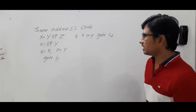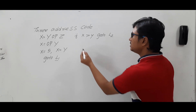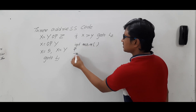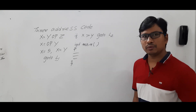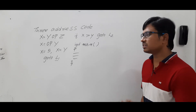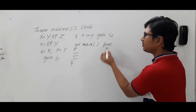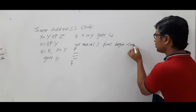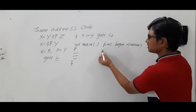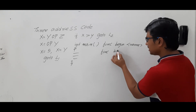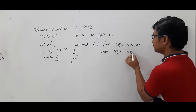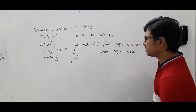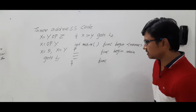If you want to call a function, or define the start and end of a function — in a high level language we write int main with a set of instructions. To represent this in three address code, we write func_begin followed by the name of the function. For example, for the main function: func_begin main. To end the function, instead of closing curly braces as in high level language, we write func_end.